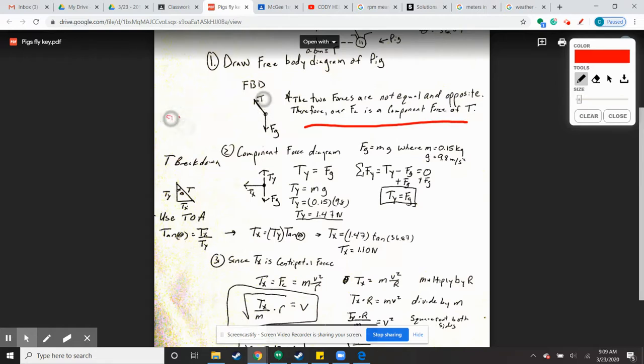The component force for tension that is overcoming gravity would be your Ty force. So Ty would be straight up, and then Tx would be going into the circle.